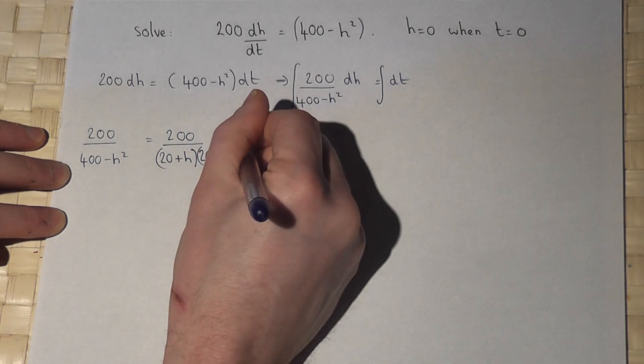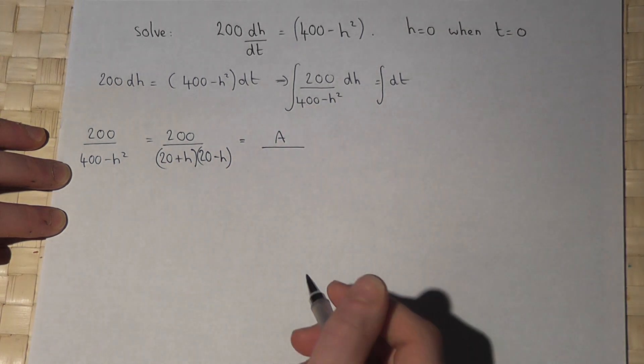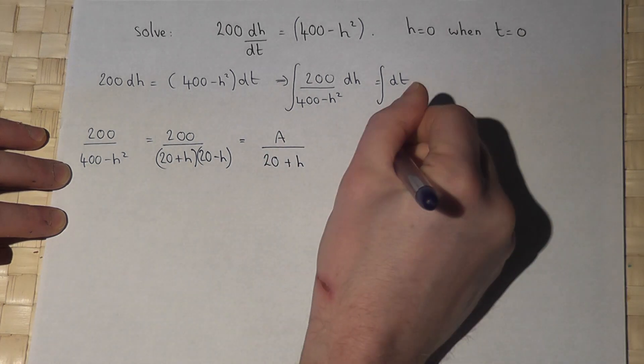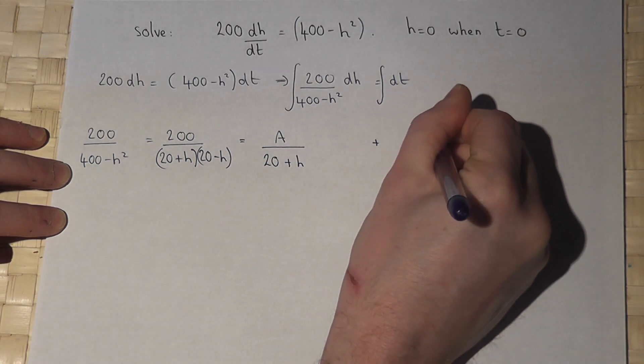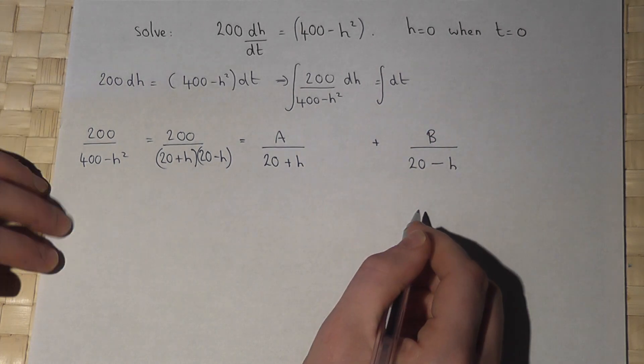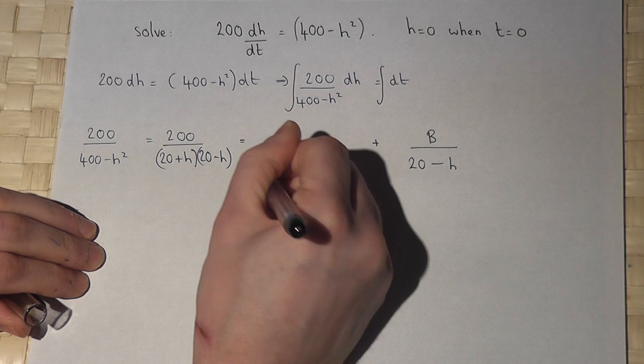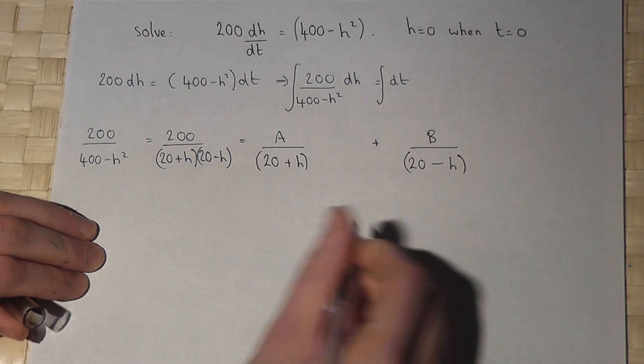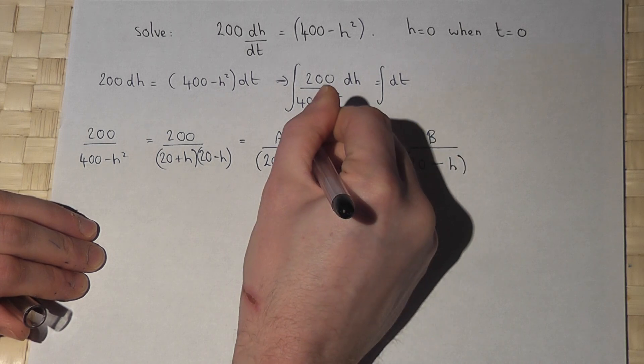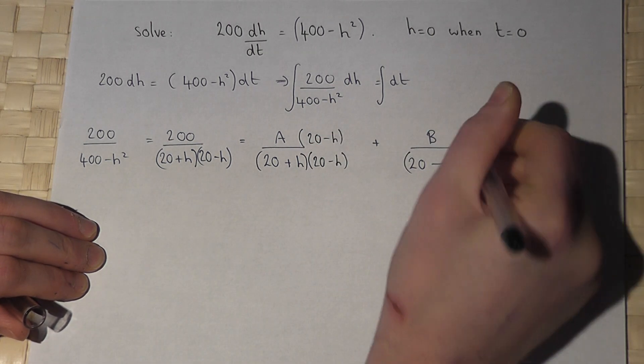And partial fractions says I can write this as some big A, some number over 20 plus h plus another unknown number which we'll find over 20 minus h. So to find what A and B are I put brackets around like so and I multiply this fraction by 20 minus h and this fraction by 20 plus h top and bottom.